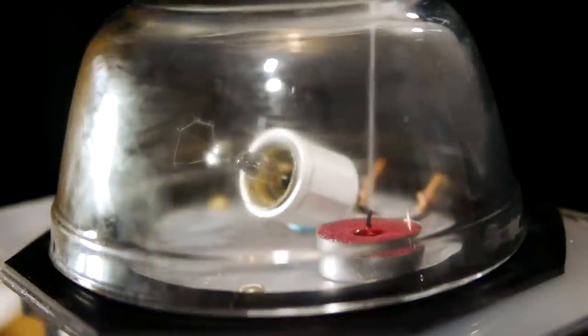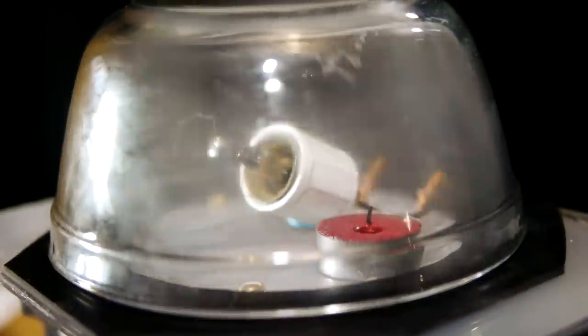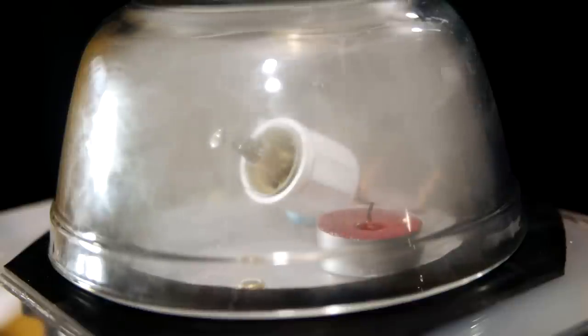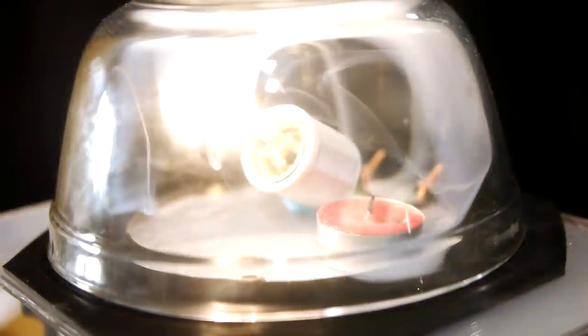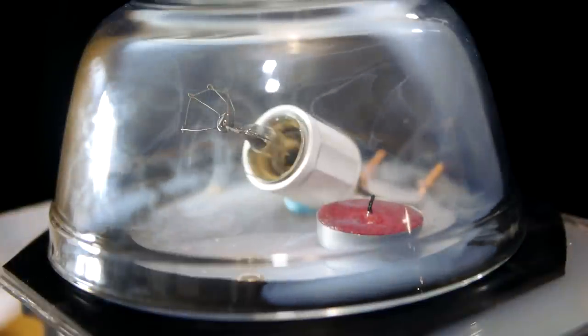The wax vapor from an extinguished candle will cause water in the air to condense into a thick fog as vacuum is pulled with the pump. A light bulb without the glass will even stay lit for several seconds in a vacuum before burning out.